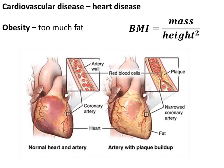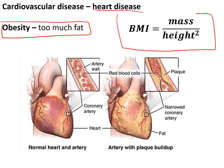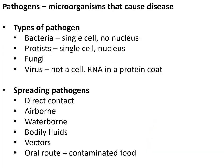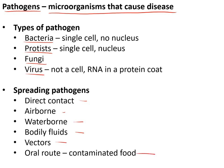Cardiovascular disease is a non-communicable disease where arteries supplying the heart get blocked by plaque, causing blockages that starve areas of the heart of oxygen, leading to heart attacks. The biggest risk factor is obesity, defined as a BMI of 30 or more (mass divided by height squared). Pathogens — bacteria, protists, fungi, or viruses — can spread by direct contact, air, contaminated water, body fluids, sexual transmission, vectors, or the oral route.